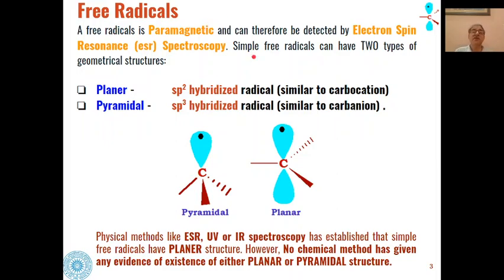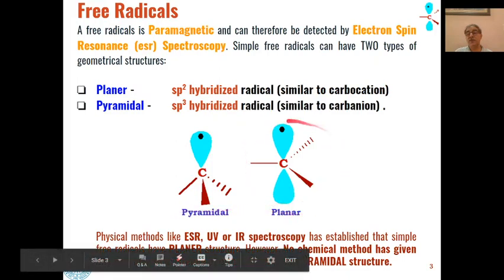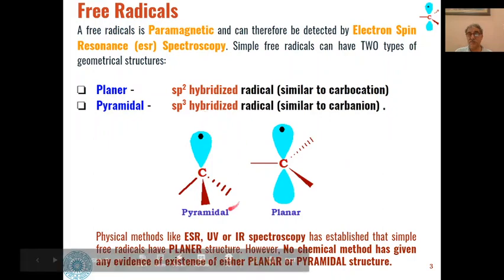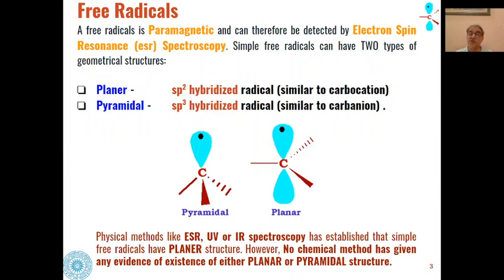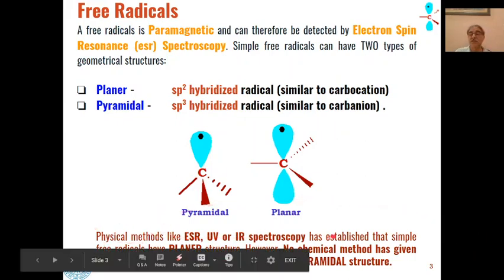Free radicals have two types of geometric structure: either they can be planar or they can be pyramidal. If they are planar, the hybridization will be SP2, which is similar to carbocations. If they are pyramidal, they will be similar to carbanions. Physical methods like ESR, UV, or IR spectroscopy indicate that free radicals have a planar structure, and no chemical method has given evidence of either planar or pyramidal structure. Generally, most free radicals are planar in nature.